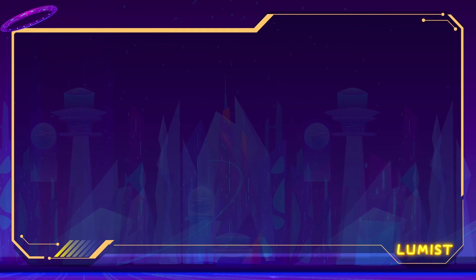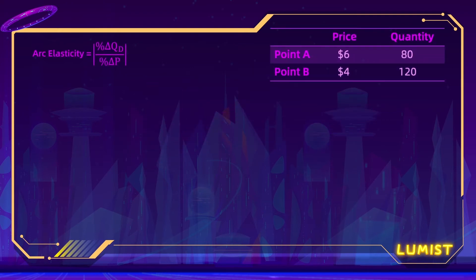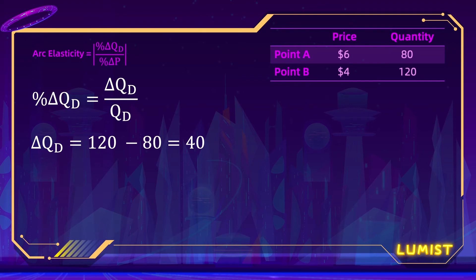Now let's put these two points in a table and try to solve for the elasticity between them. First, we calculate the percentage change in quantity demanded, which equals the change in quantity divided by quantity. Change in quantity is easy — quantity is increasing from 80 doughnuts to 120 doughnuts, so the change is 120 minus 80, which is 40.